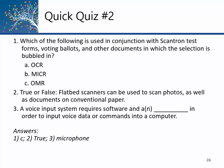Quick quiz number two. Which of the following is used with Scantron test forms, voting ballots, and other documents where selections are bubbled in? That would be optical mark recognition — OMR. True or false: flatbed scanners can be used to scan photos as well as documents on conventional paper — absolutely true. And three: a voice input system requires software and something else to input voice data or commands — you also need a microphone, the physical device that takes sound waves and converts them to ones and zeros.